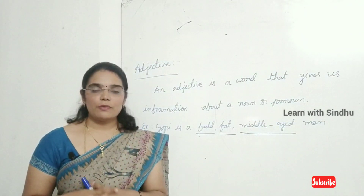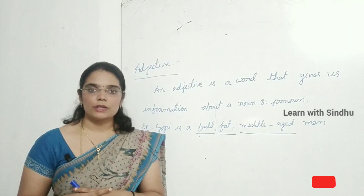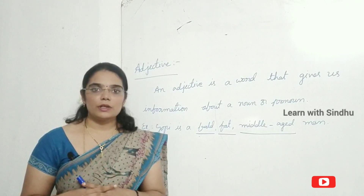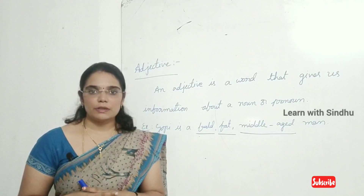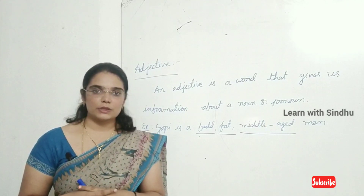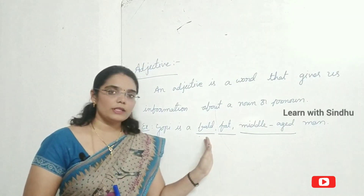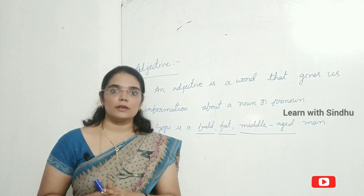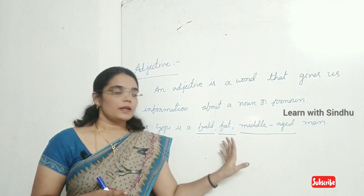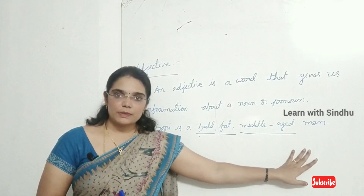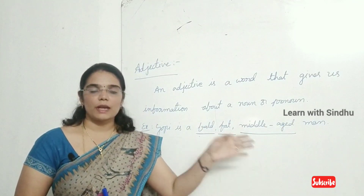Now we will see what an adjective is. An adjective is the word which gives us information about a noun or a pronoun — it tells us about the quality of the noun. For example: Gobi is a bald, fat, middle-aged man. Here 'bald', 'fat', and 'middle-aged' all represent the quality of this man. What kind of man is he? He is a middle-aged man, he is a bald man, he is a fat man.